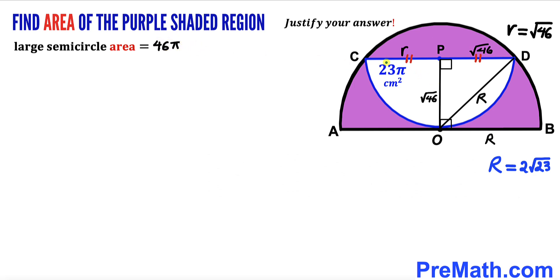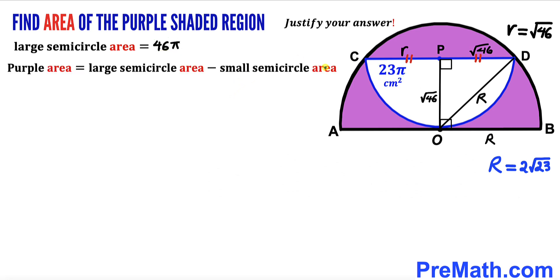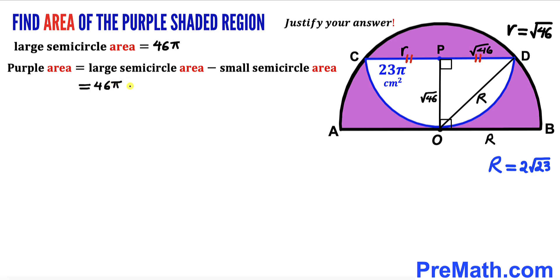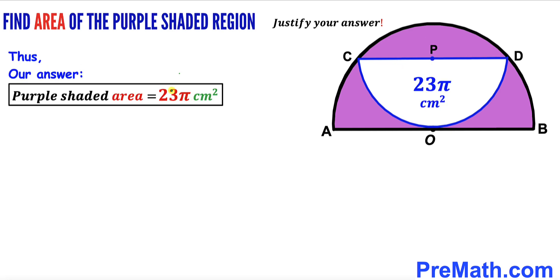We can observe that the larger semicircle area, 46π, is exactly twice the smaller semicircle area, 23π. So the area of the purple shaded region = 46π − 23π = 23π cm². That is our final answer. Thanks for watching and please don't forget to subscribe to my channel for more exciting videos.